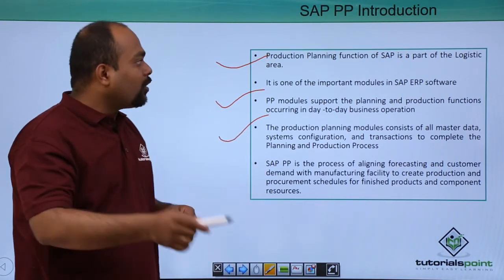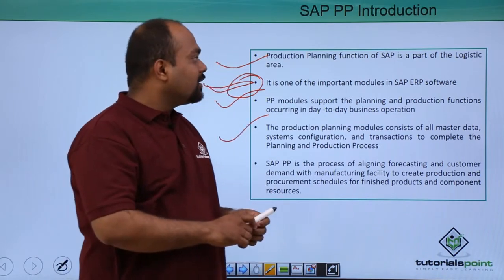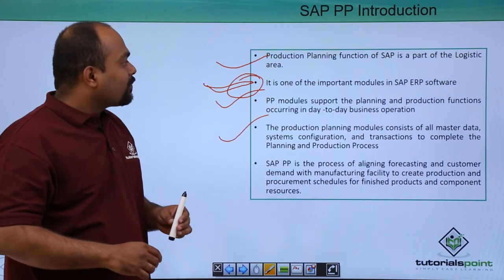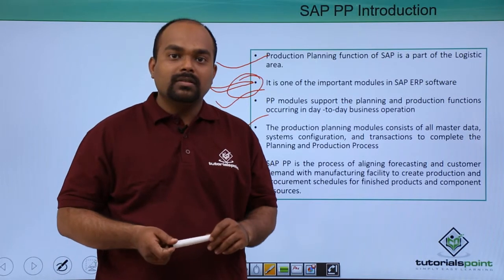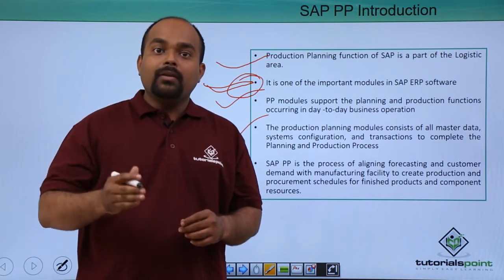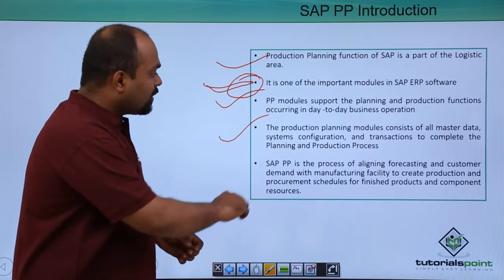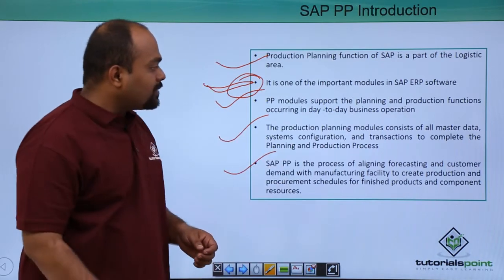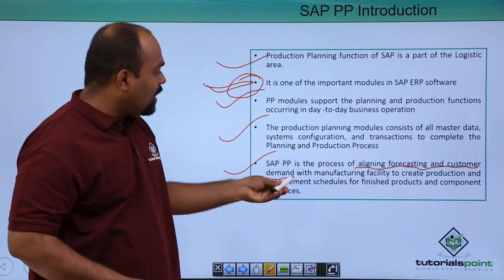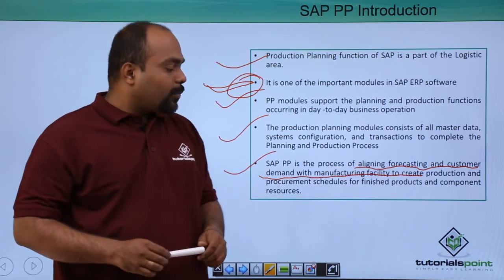SAP PP is one of the most important tools because all the required basic material is put into this SAP PP module. The production planning module supports the planning of production day to day in industries for business processes. SAP PP is the process of aligning forecasting and customer demand with the manufacturing facility to create production and procurement schedules.